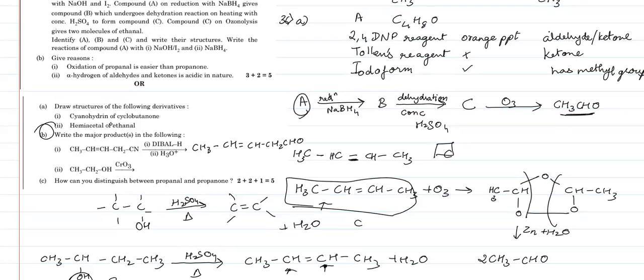The next reaction uses CrO3, which is a basic oxidation reaction — an alcohol is oxidized to a carbonyl compound. The product involves CH3-CH2-... though I realize I had an extra carbon there — let me correct that.